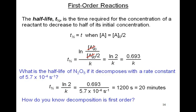How do you know the decomposition is first-order? One way you can tell is the units of K — K is seconds to the negative 1. Also, if we plot the natural log of A versus T and get a straight line with a negative slope, that is an indication it is first-order, and we can figure out the value of K by finding the slope.